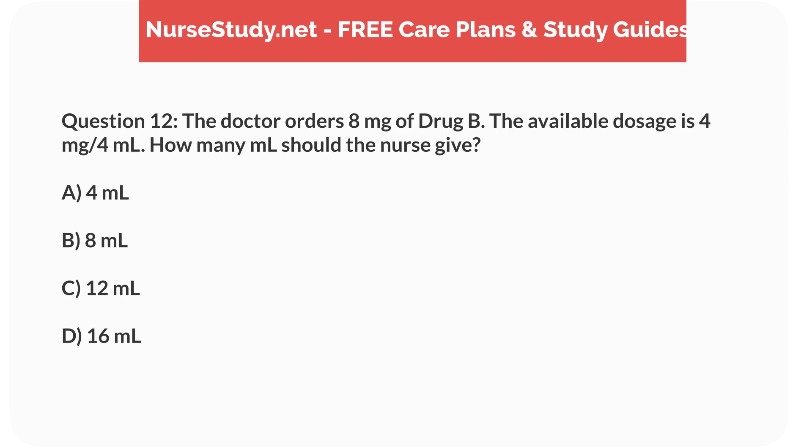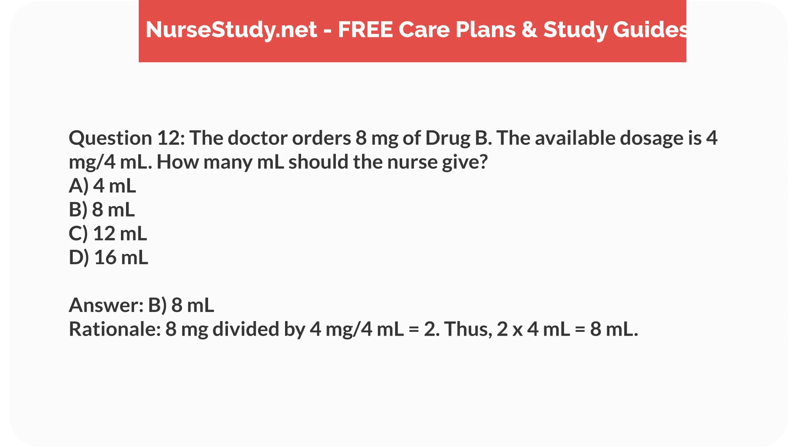Question 12. The doctor orders 8mg of drug B. The available dosage is 4mg per 4mL. How many mL should the nurse give? a. 4mL, b. 8mL, c. 12mL, d. 16mL. Answer: b. 8mL. Rationale: 8mg divided by 4mg per 4mL equals 2. Thus, 2 times 4mL equals 8mL.